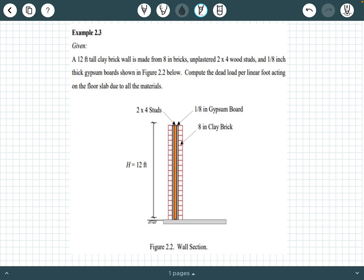The whole wall is 12 feet high. The base of the wall is connected to some kind of concrete slab. The problem says compute the dead load per linear foot acting on the floor slab due to all the materials. What we're really looking for is the dead load per linear foot acting on the floor slab due to the weight of all these wall materials.